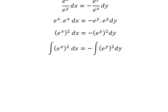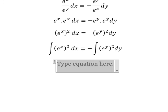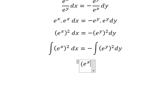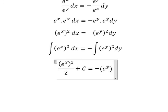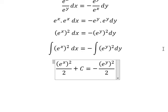And this one we get e to the power of x to the power of two over two plus C equals to negative e to the power of y everything to the power of two over two.